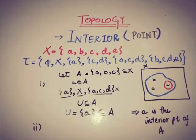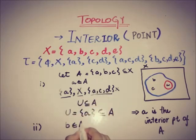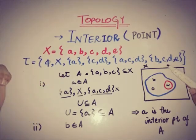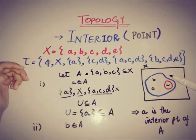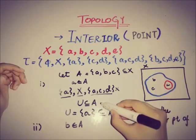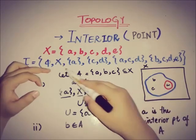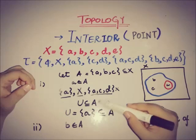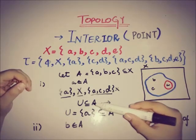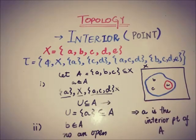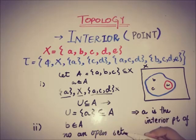Now we will check for the second point b, as b belongs to the set A. The open neighborhoods of b are X and {b,c,d,e}. Both of them do not satisfy the condition: X is not a subset of A and {b,c,d} is also not a subset of A. This means there is no open neighborhood of b that is a subset of A, and b is not an interior point.